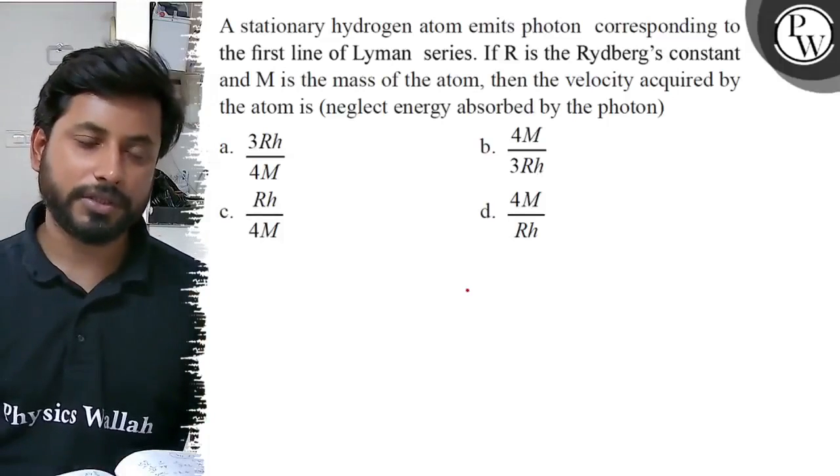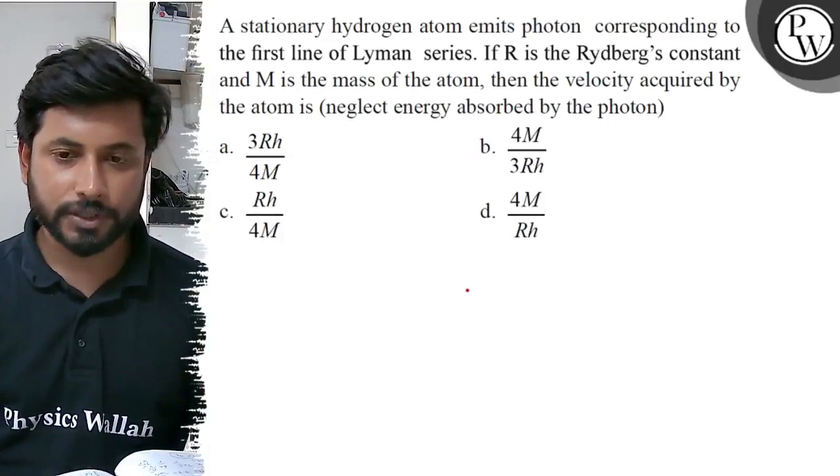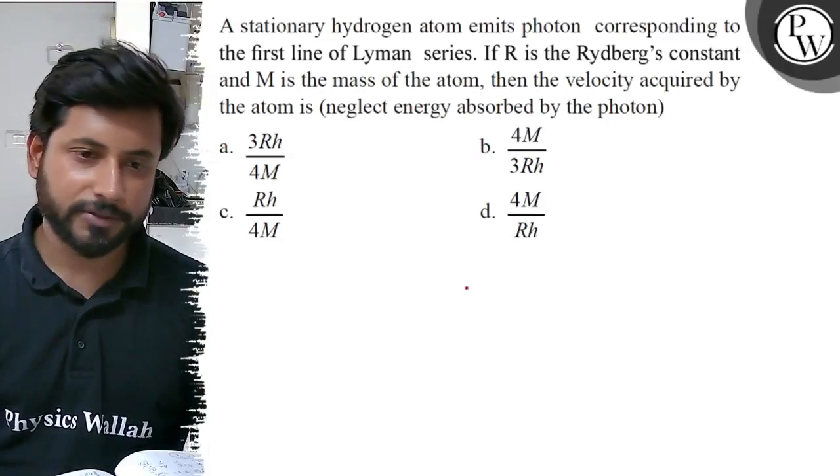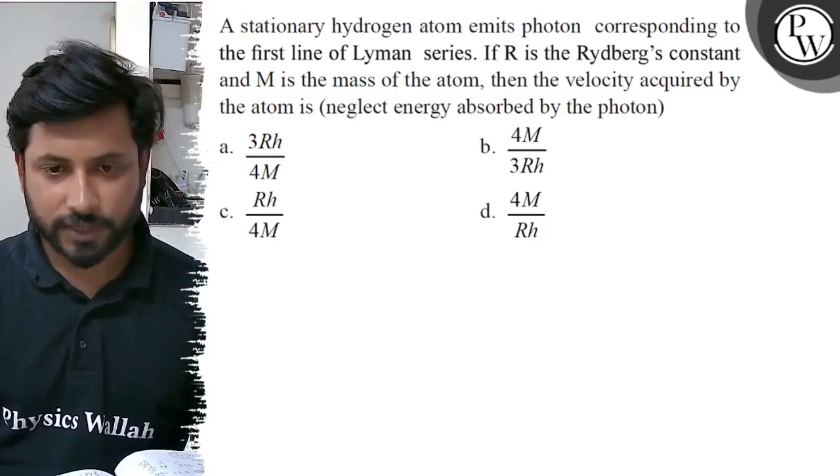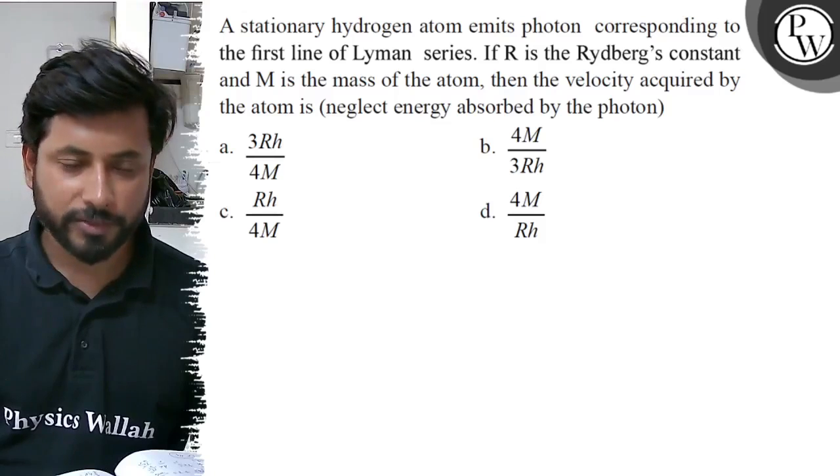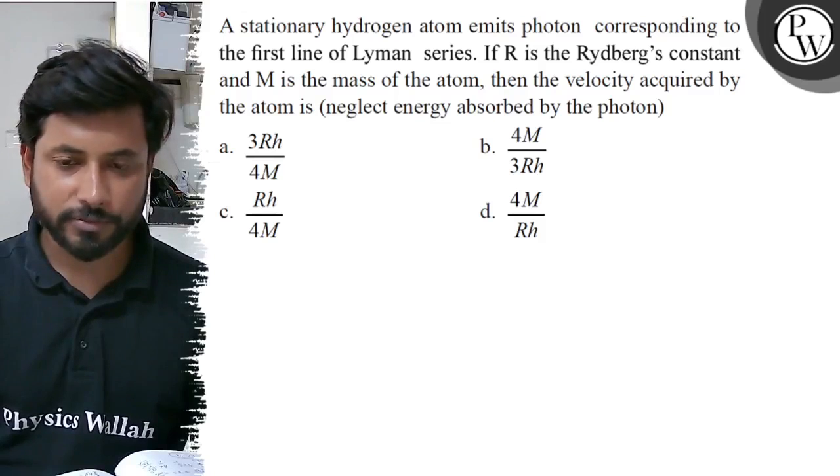Hello, let us see this question. A stationary hydrogen atom emits photon corresponding to the first line of Lyman series. If R is the Rydberg constant and M is the mass of the atom, then the velocity acquired by the atom is - neglect energy absorbed by the photon.